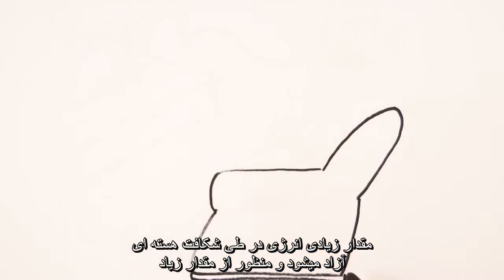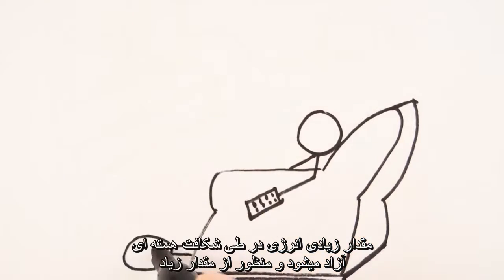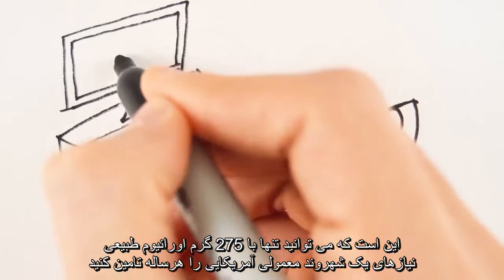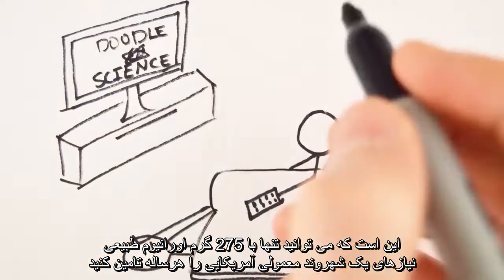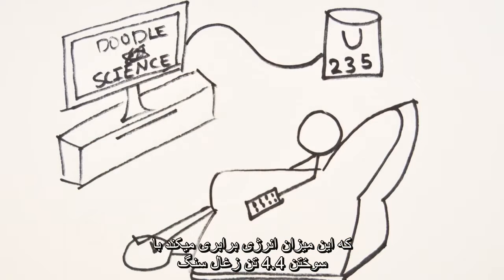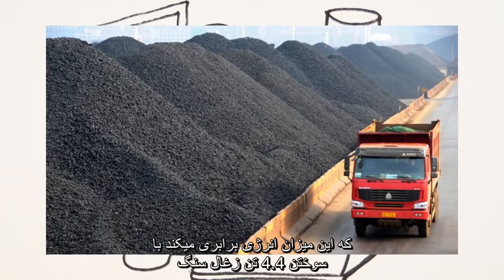A lot of energy is released during nuclear fission — and I mean a lot. You could meet the energy demand of an average American every year with just 275 grams of natural uranium. That's equivalent to burning 4.4 tons of coal.